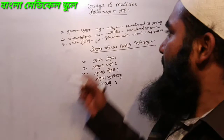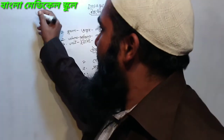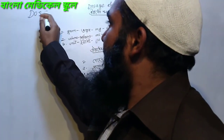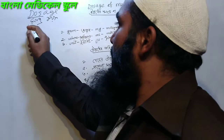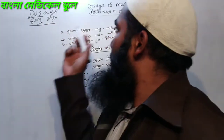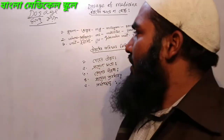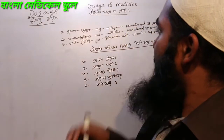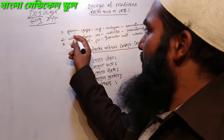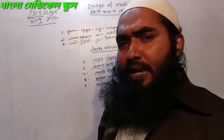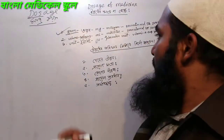We know dose. Dose means oshudder maatra — the measure/amount of medicine. Dose is measured in units. Dose. MG — milligrams.